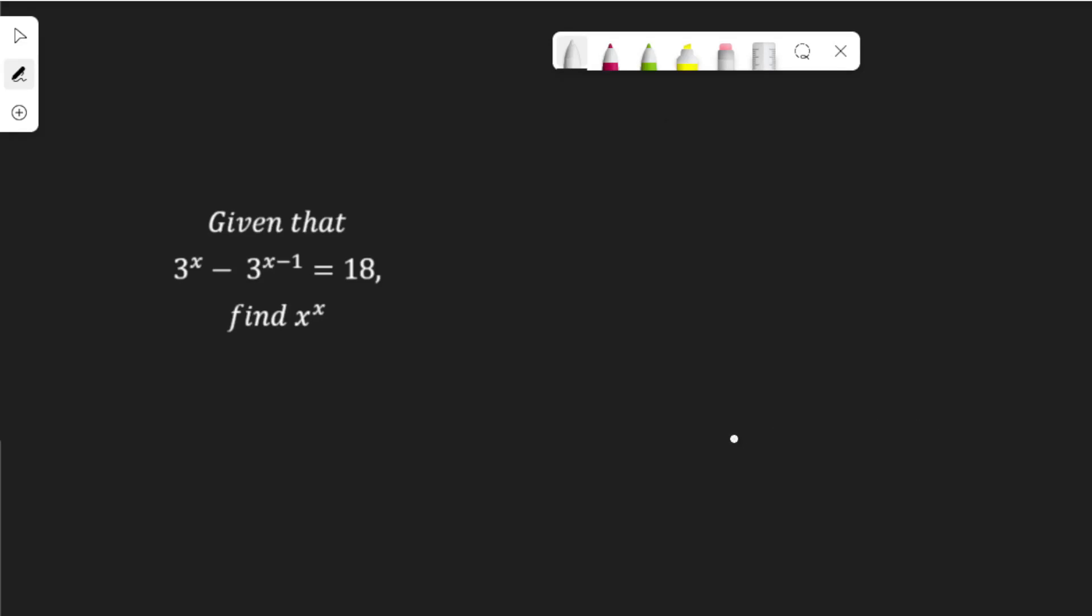Hello, in this video I will solve this question. Given that 3 to the power of x minus 3 to the power of x minus 1 is equal to 18, find x to the power of x.